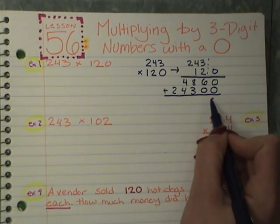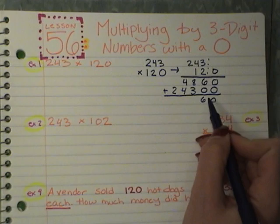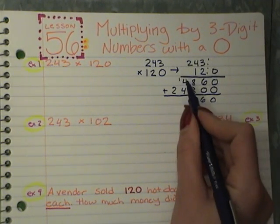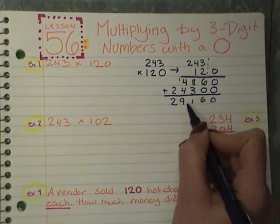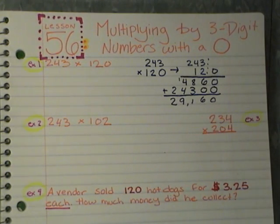0 plus 0, 6, 11, 8 plus 3 is 11, 4 plus 4 is 8, plus 1 is 9, and 2, 1, 2, 3, 29,160.